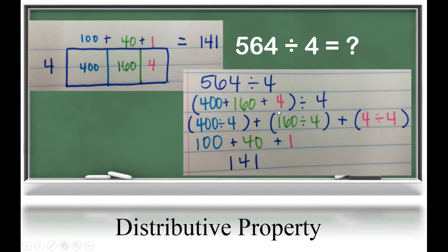You can see that recorded here. Then, we divided each of those pieces, 400 divided by 4, 160 divided by 4, and 4 divided by 4. Then, we add up those pieces to get our quotient of 141.